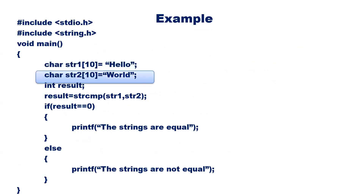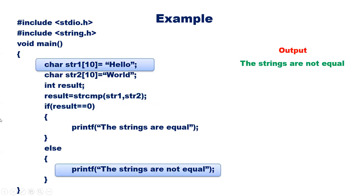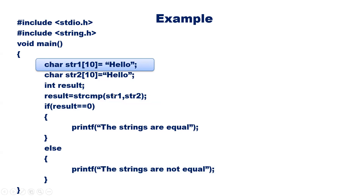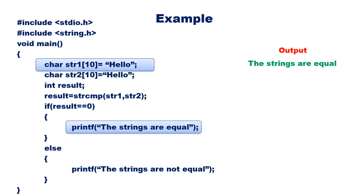Here str1 is "hello" and str2 is "world". strcmp(str1, str2) — since they are not equal the value returned will be non-zero, so if result is equal to zero the strings are equal, otherwise the strings are not equal. Here the value returned will be non-zero so we get the answer "the strings are not equal". Now if we make both strings the same, strcmp will return zero, the condition is true, and we get the answer "the strings are equal".